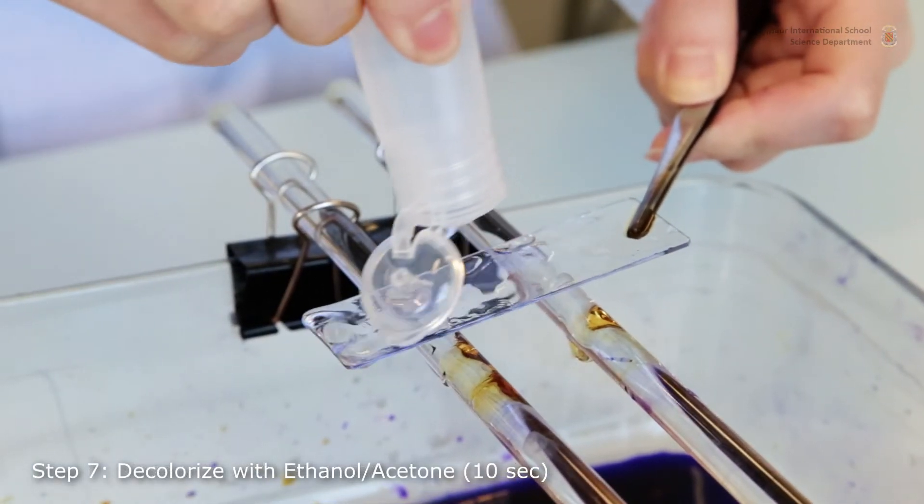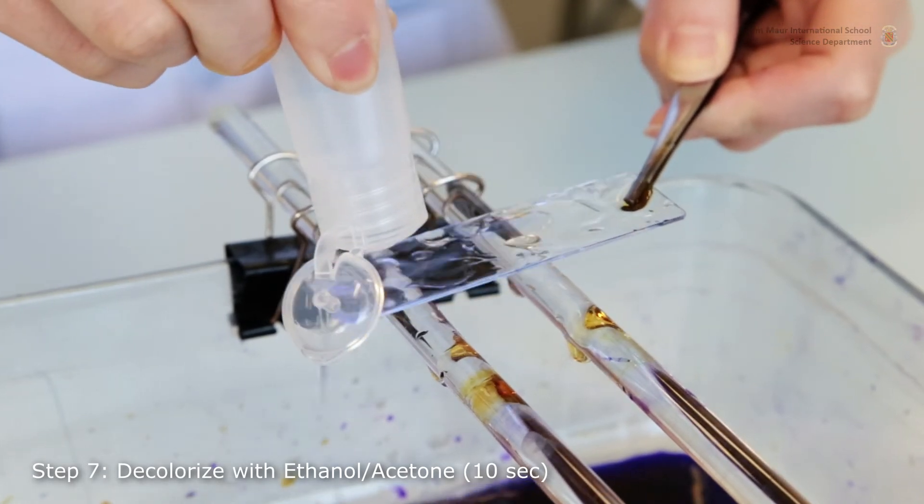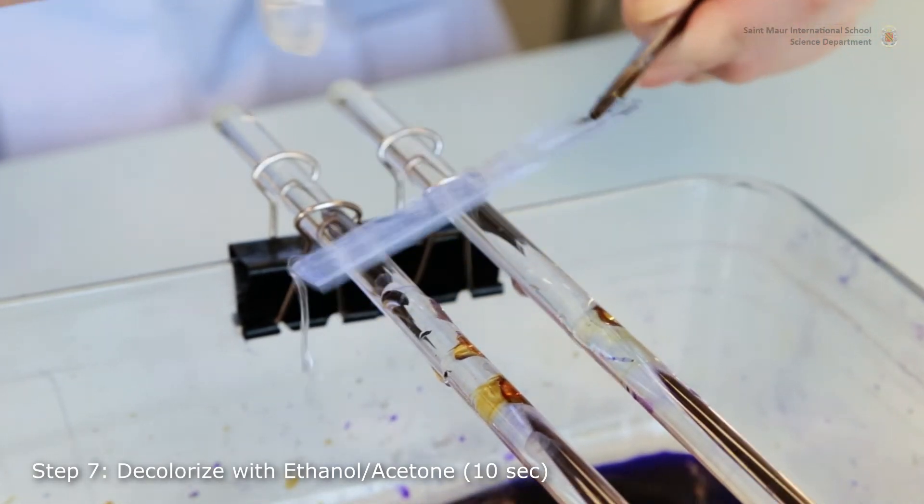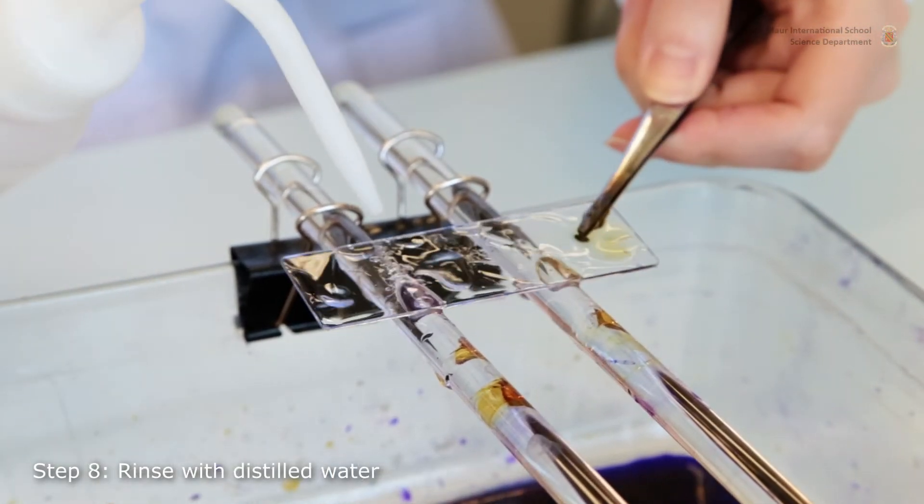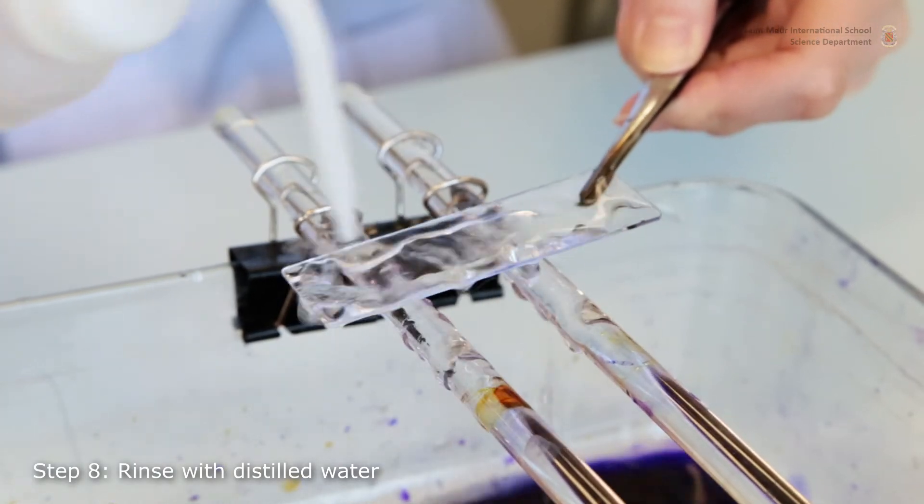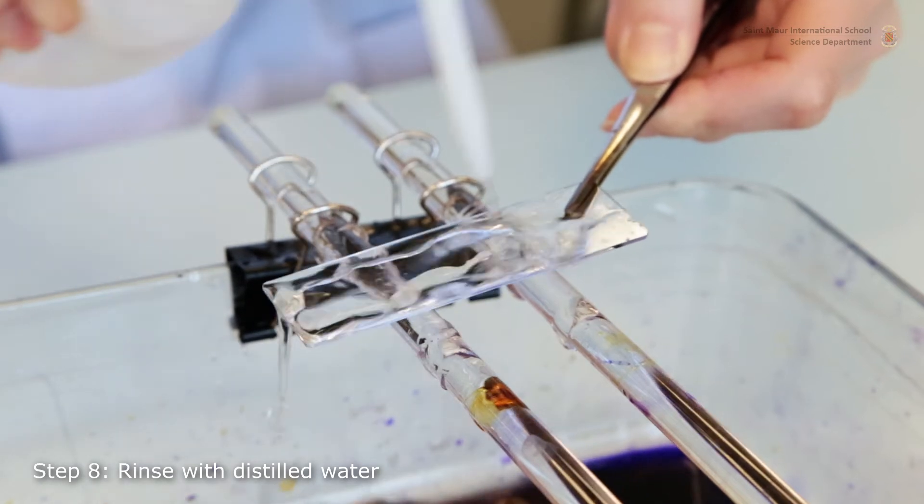The slide is washed for 10 seconds with either acetone or ethanol in order to remove the weakly bound crystal violet from the Gram-negative bacteria. Gram-positive bacteria, on the other hand, will remain stained. The slide is promptly rinsed with distilled water to avoid excess decolorization.